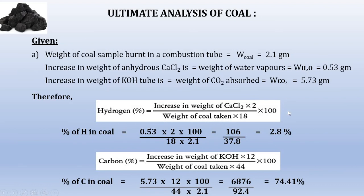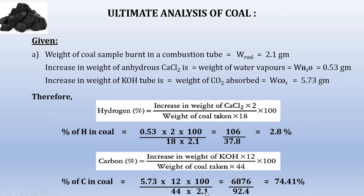For percentage carbon and hydrogen: coal sample 2.1 g; increase in weight of CaCl₂ (weight of H₂O) = 0.53 g; increase in weight of KOH (weight of CO₂) = 5.73 g. Percentage hydrogen = 0.53 × (2/18) × (100/2.1) = 2.48. Percentage carbon = 5.73 × (12/44) × (100/2.1) = 74.41.